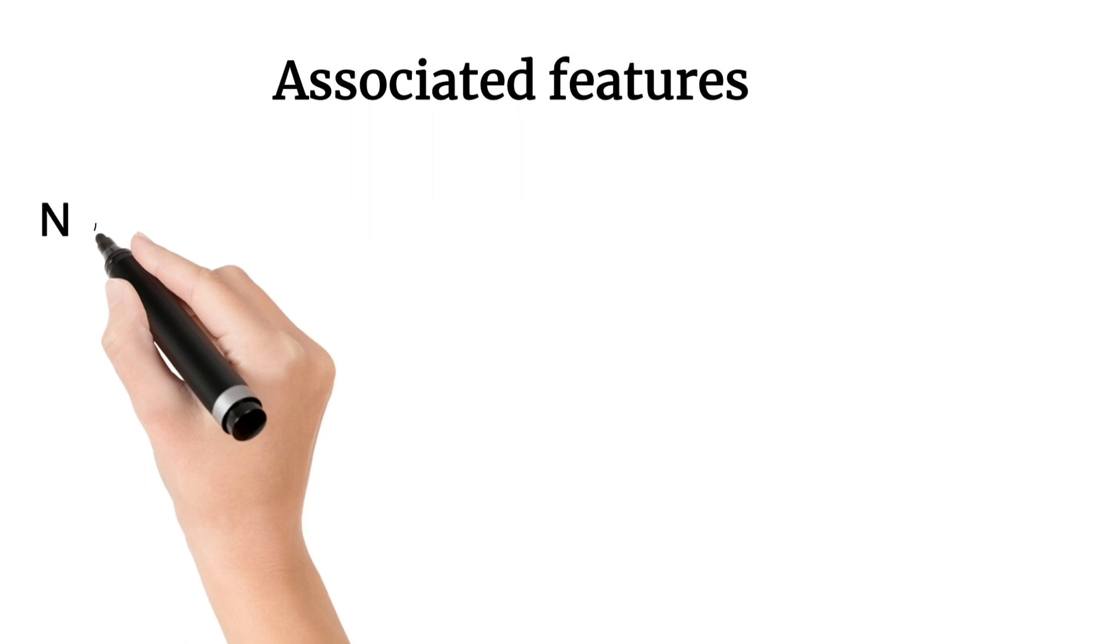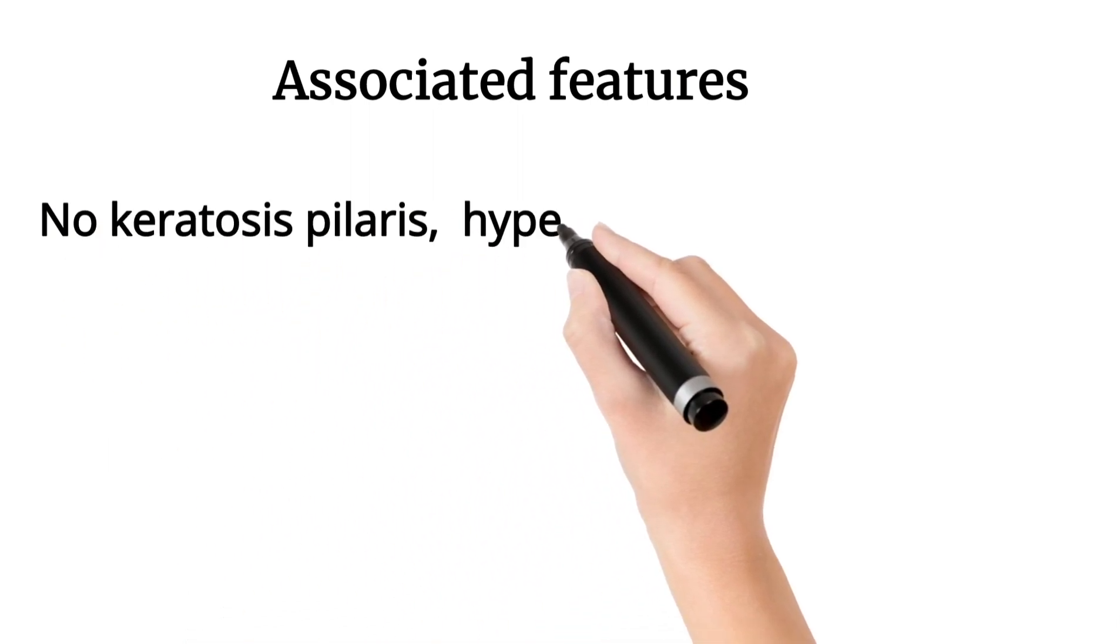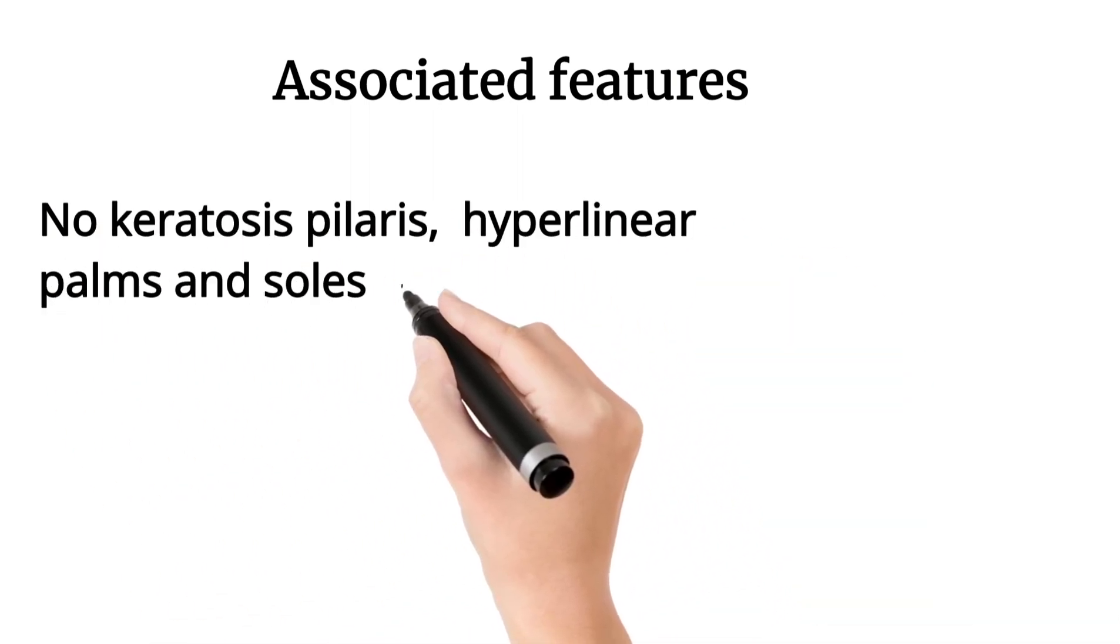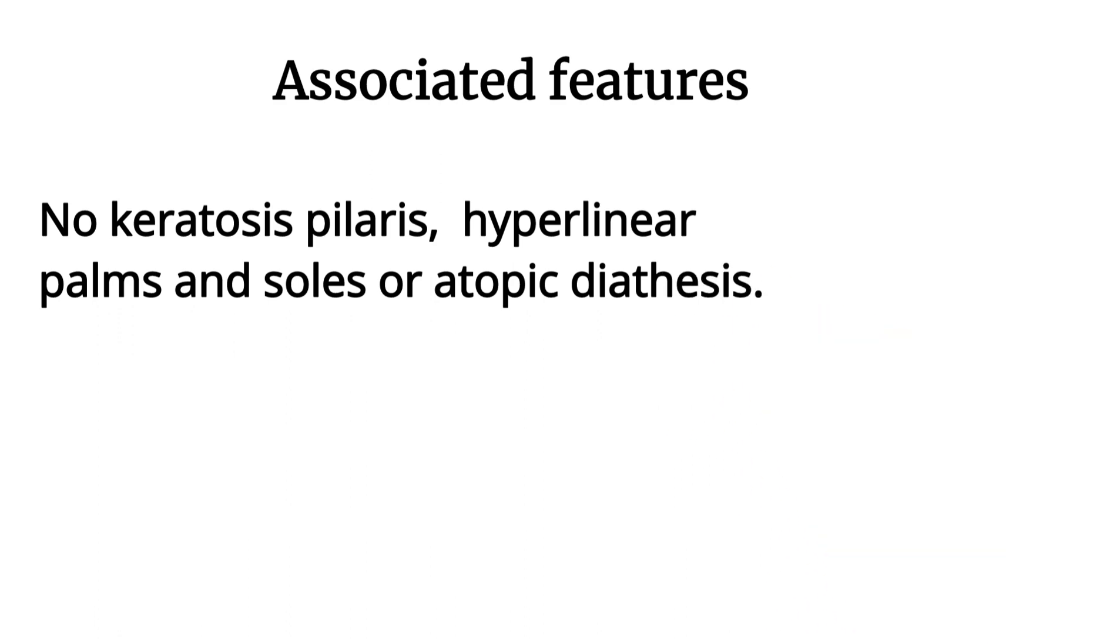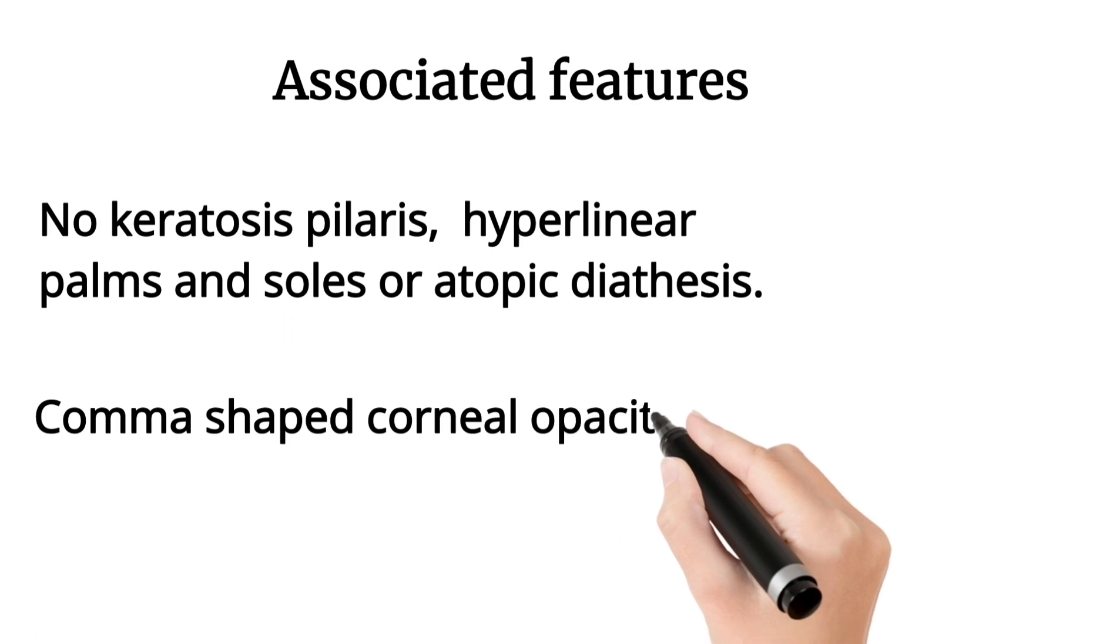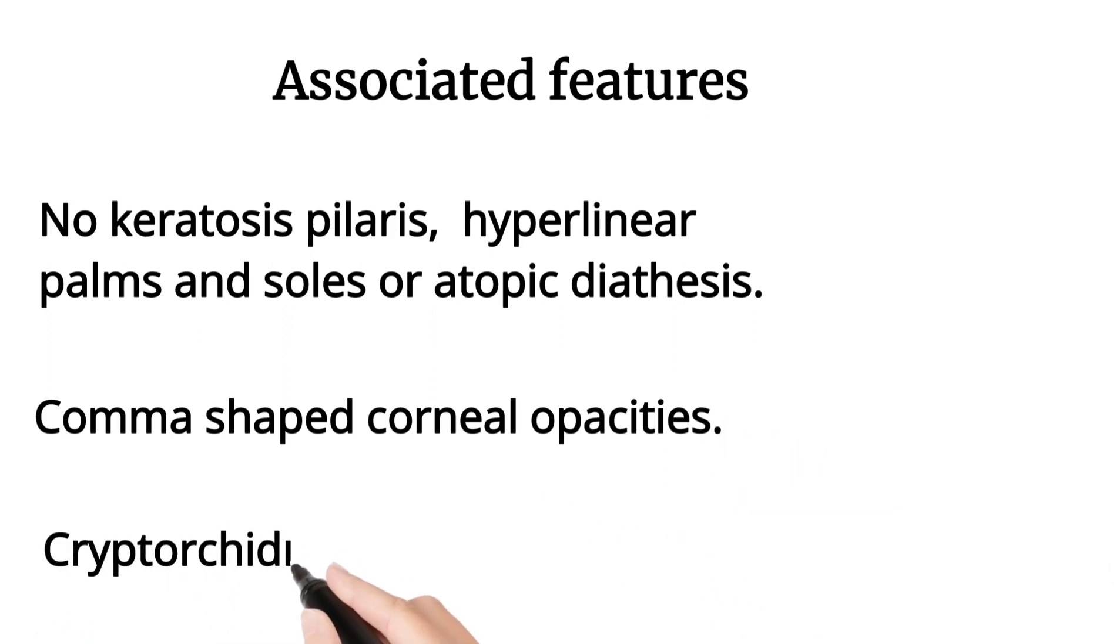X-linked ichthyosis is not associated with keratosis pilaris, hyperlinear palms and soles, or atopic diathesis. Here we can see comma-shaped corneal opacity which do not interfere with vision, and also cryptorchidism.